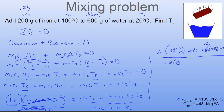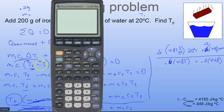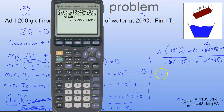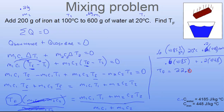Plugging in: numerator is (0.6 × 4185 × 20) + (0.2 × 448 × 100), divided by (0.6 × 4185 + 0.2 × 448), which gives T_f = 22.8°C.